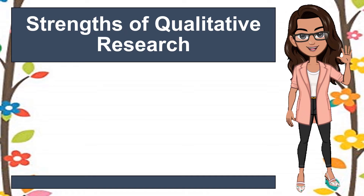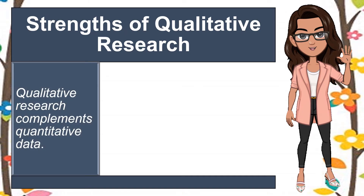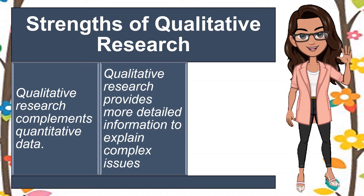Let's proceed to the strengths of qualitative research. Number one, qualitative research complements quantitative data. Interview and observation are the common instruments used in the conduct of a qualitative study. Such instruments can provide qualitative data that can be utilized as a support for any quantitative data appearing in a study. Hence, a more reliable result will be ensured. Number two, qualitative research provides more detailed information to explain complex issues. Since this type of research study requires the researcher to immerse himself or herself in the phenomenon under investigation, direct experiences can be acquired. Considering information-rich participants as well as utilizing interview and observation may enable the researcher to gather more accurate data needed in explaining a complex phenomenon.